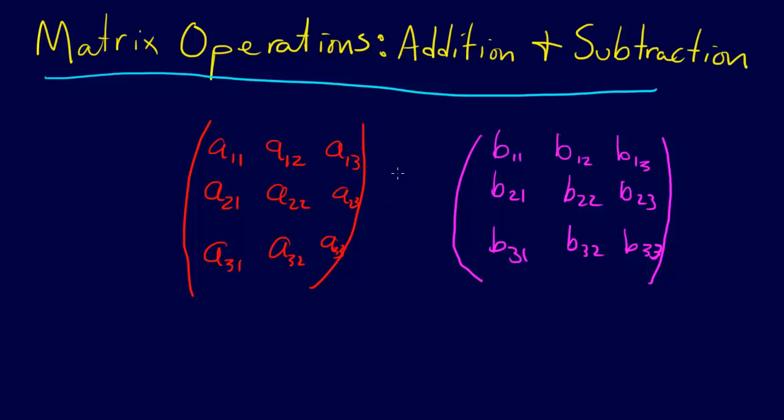So now we can add or subtract these matrices. The way that addition and subtraction is defined is, let's say that equals another matrix C, and I'm just going to denote it C here just because I don't have room to write the whole thing out.